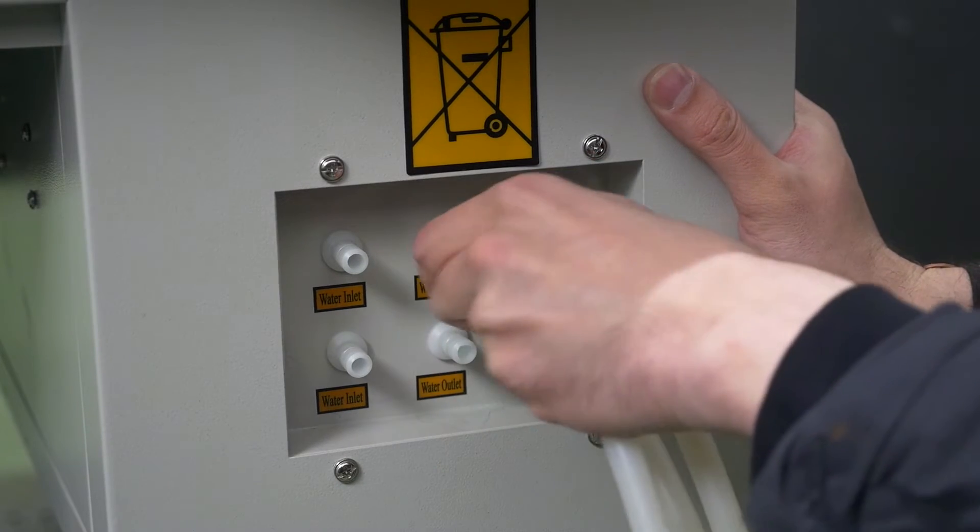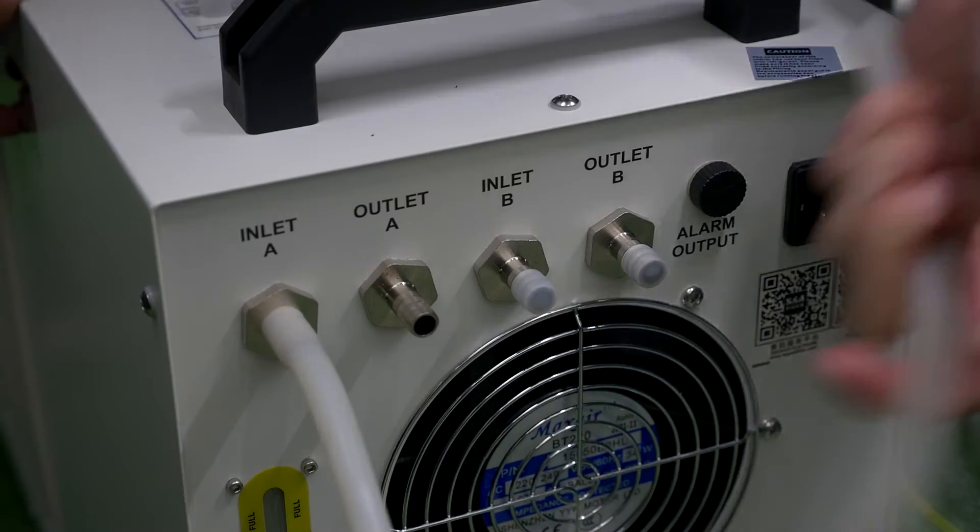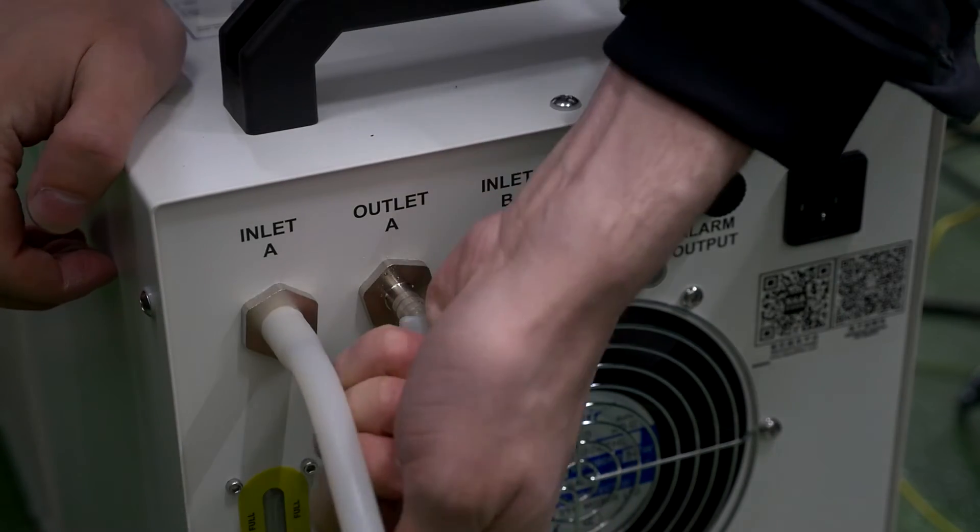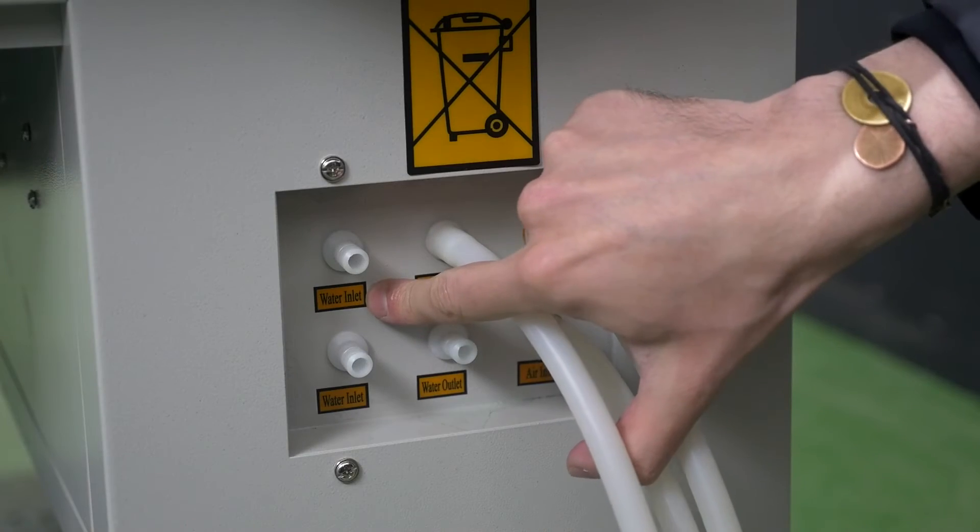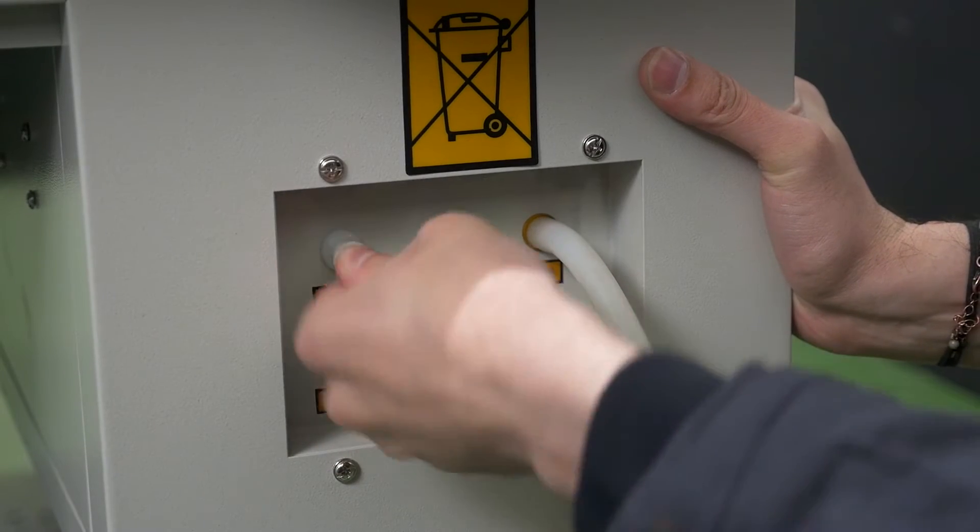Connect the second end of the silicon hoses to the chiller in the following order. Connect the hose from the chiller water inlet fitting to the water outlet on the machine, and the hose from the chiller water outlet fitting to the water inlet on the machine.